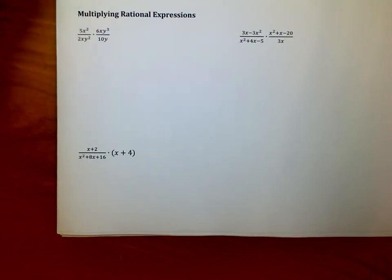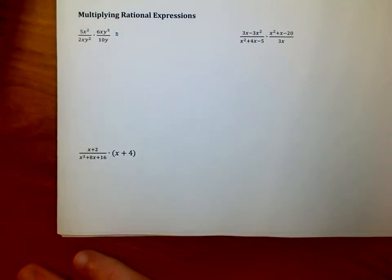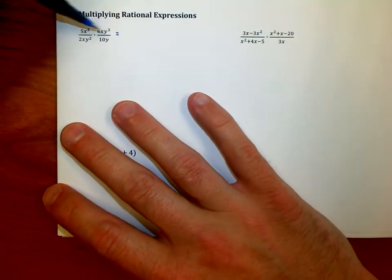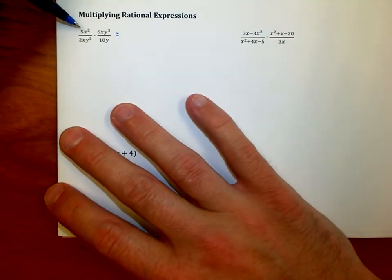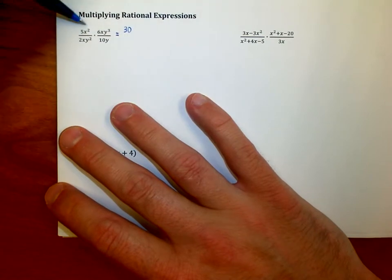Here's kind of the wrong way—it'll work, but it's just not going to help later on. I could just multiply everything straight across. So I could look at the top and say I have 5 times 6, which is 30, and I have x squared times x, which is x cubed.